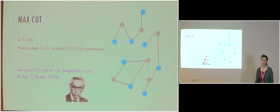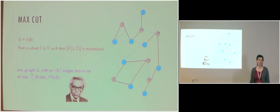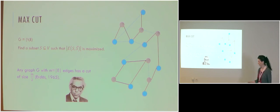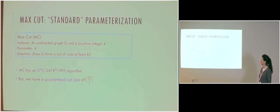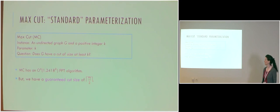Using the probabilistic method, Erdős showed that any graph which has m edges contains a cut of size m over 2. Such a cut can be obtained by using a simple linear-time greedy algorithm. Here is the standard parametrization for MaxCut: we are given an undirected graph G and a positive integer K, which is the parameter, and the question is does G have a cut of size at least K?